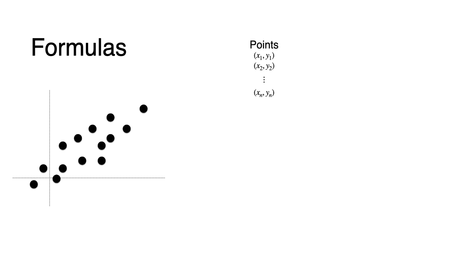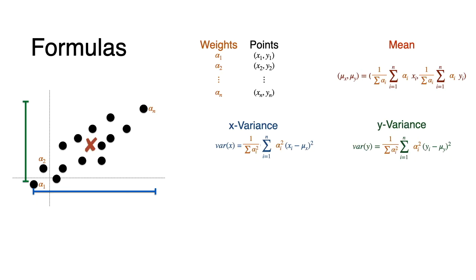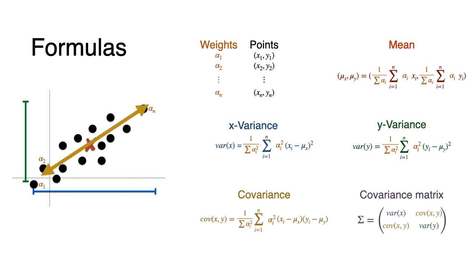Here are the formal formulas. Our points are (x1, y1), (x2, y2), all the way to (xn, yn), and each point comes with a corresponding weight alpha_i — a number between 0 and 1 telling us how much of the point is in the dataset. For the mean, instead of dividing by n, we divide by the sum of alpha_i, and each xi and yi gets weighted by alpha_i — it's a weighted average. For the x-variance and y-variance, we divide by the sum of alpha_i squared and each term gets multiplied by alpha_i squared. Same thing for the covariance. And now we have our covariance matrix.